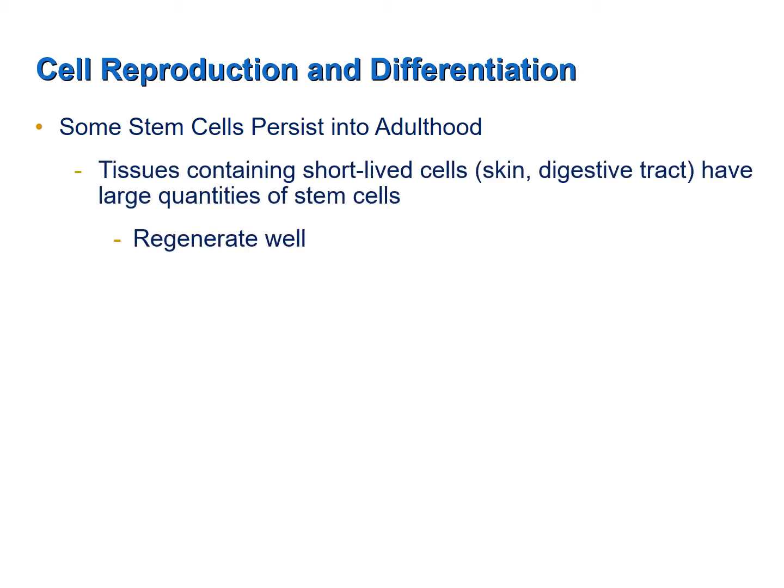Tissues which contain cells that don't live very long, such as your skin and the lining of your digestive tract, have large quantities of stem cells. This large quantity of stem cells allows for the formation of new cells when the old cells die. Consequently, those tissues that have large quantities of stem cells regenerate quite well. When your epidermis is destroyed or when you burn the inner lining of your mouth, those tissues repair and regenerate fairly quickly because they have large quantities of stem cells.